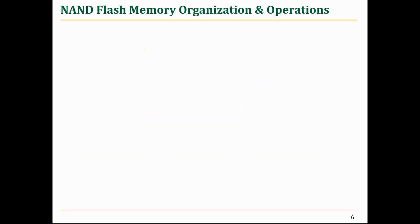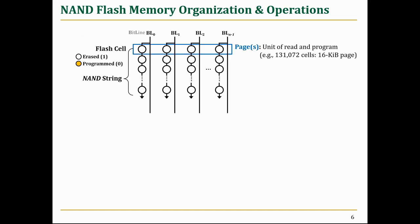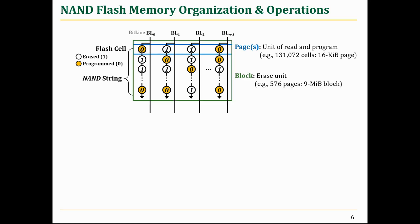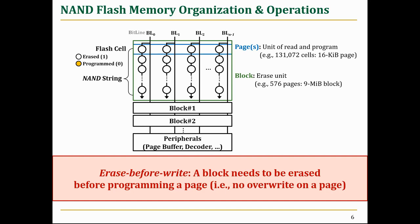In NAND Flash memory, multiple cells form a NAND string, which is connected to a bit line. Cells at the same location of different bit lines, which is called a page, have to be read and programmed at the same time. Pages at the same NAND strings comprise a block, which is the unit of erase operations, and multiple blocks share bit lines and peripherals. These unique organizations and operation mechanisms result in the erase-before-write property: an entire block needs to be erased before programming its pages. In other words, a Flash page cannot be overwritten directly.